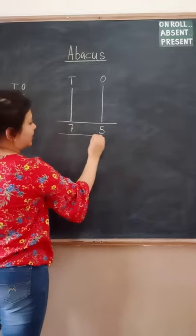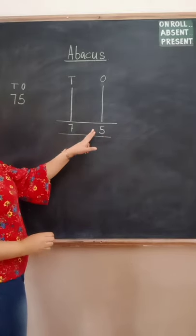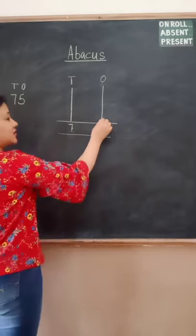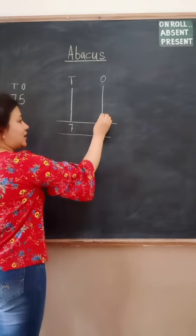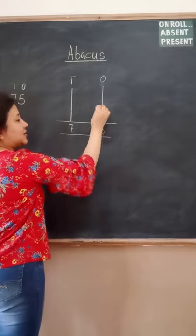Now simple. You need to draw the beads. How many beads will you draw children on the stand? Five. Because the digit there is five. So one, two, three, four and five.